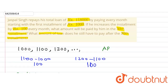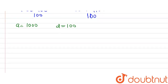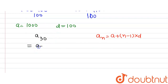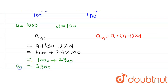We need to find the 30th installment, which is the 30th term of this AP, i.e., A₃₀. Using the formula for the Nth term: Aₙ = A + (N−1) × D, we get A₃₀ = 1,000 + (30−1) × 100 = 1,000 + 29 × 100 = 1,000 + 2,900 = Rs. 3,900. So the 30th installment is Rs. 3,900.